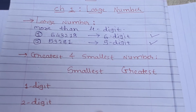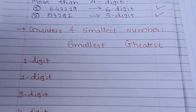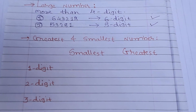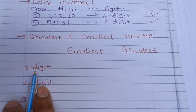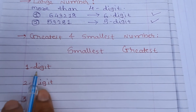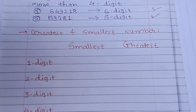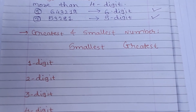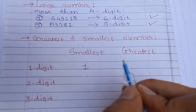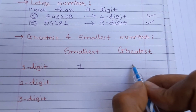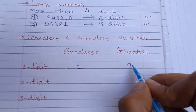Now let's move on to the next topic: the greatest and smallest numbers. Which is the smallest one-digit number — is it 0 or 1? Students, it is 1. And the greatest one-digit number is 9.